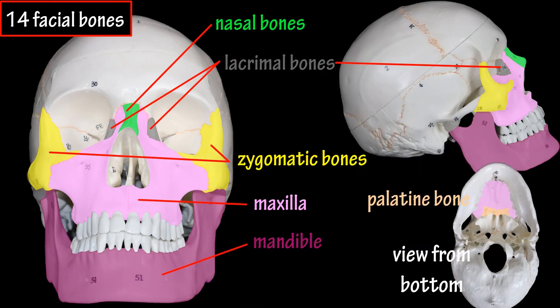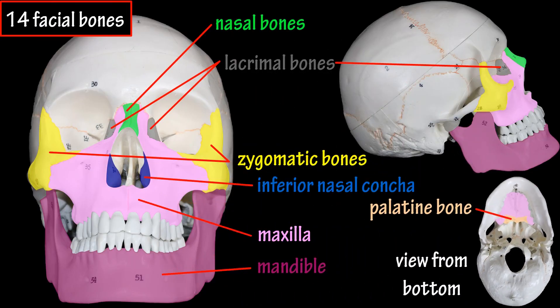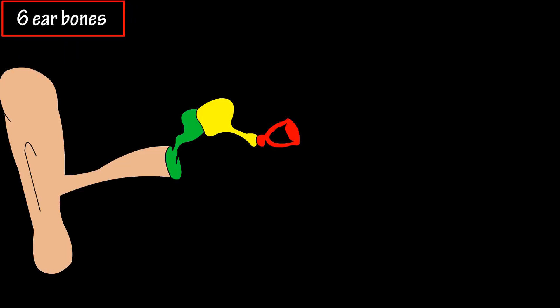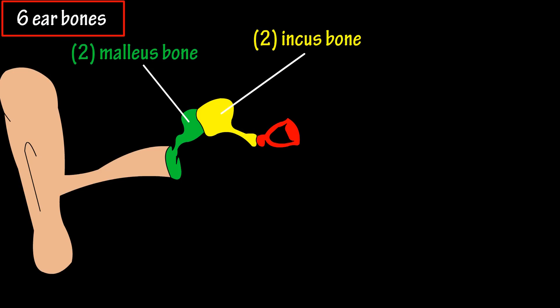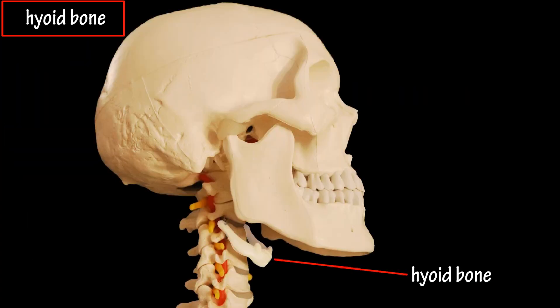Two inferior nasal concha, located on the inner side wall of the nasal cavity. And the vomer, located between the nasal concha, which we just mentioned. The six ear bones are all very small structures, and include two malleus bones, two incus bones, and two stapes bones. Some sources also discuss the hyoid bone with bones of the skull, as it is a single bone located beneath the skull and the neck. And that covers the basics on the bones of the skull.